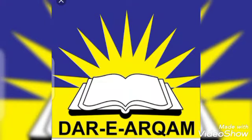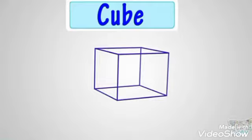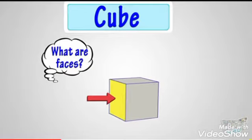I am the teacher of class nursery. Today we will learn about solid shapes. First we learn about cube. Cube is a solid shape and ludo dice is a perfect example of cube. Now what are faces?